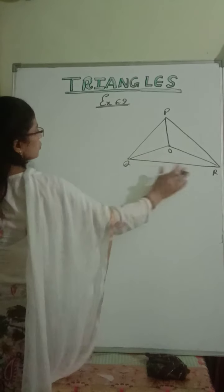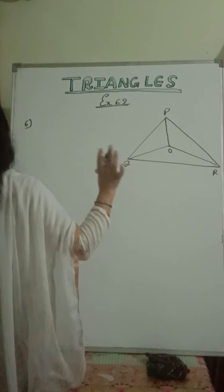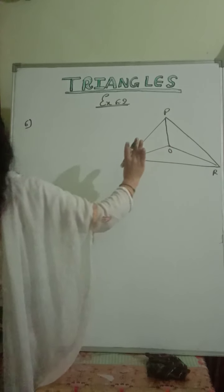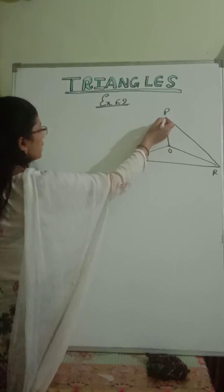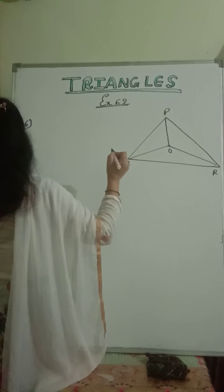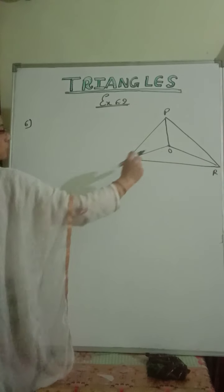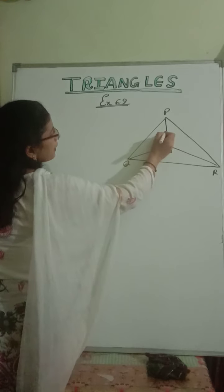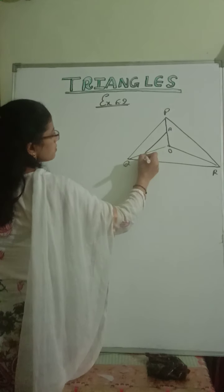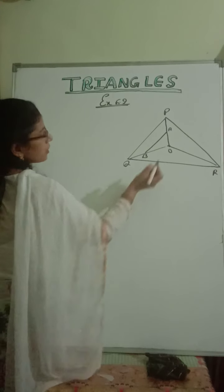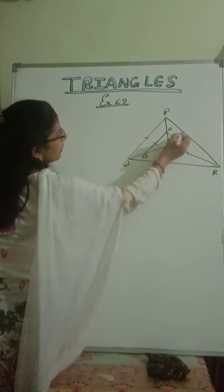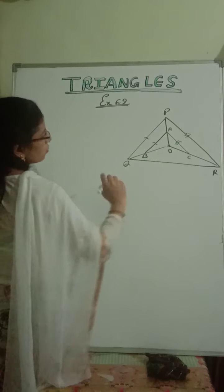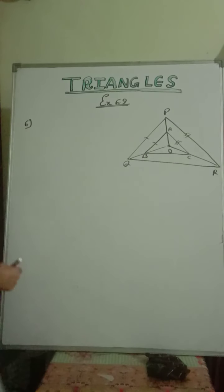Question number 6. I have drawn a basic outer model of a triangle. A, B, C are the points on OP, OQ, and OR respectively. Such that AB is parallel to PQ and AC is parallel to PR. You have to show that BC is parallel to QR.